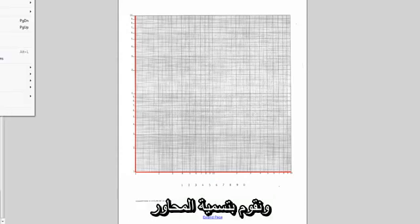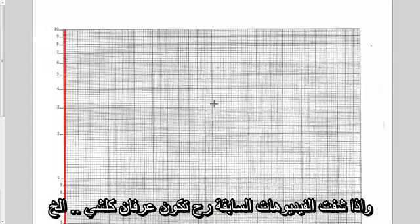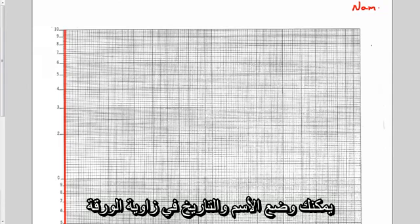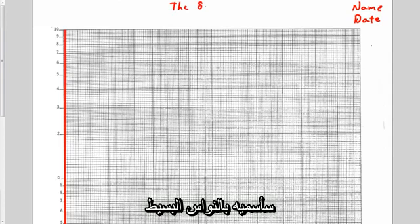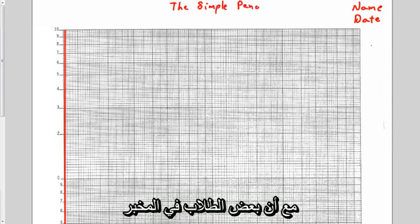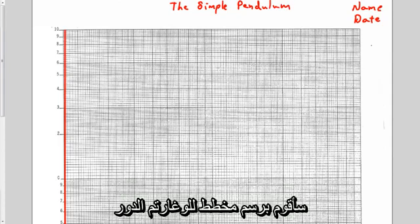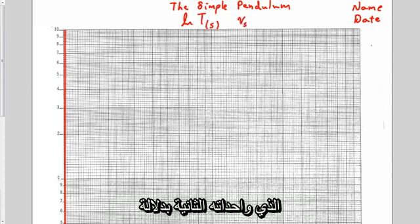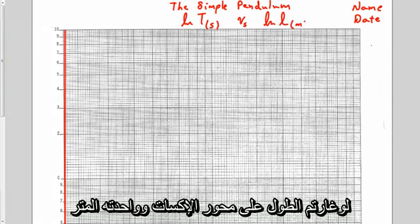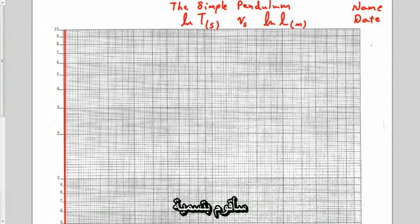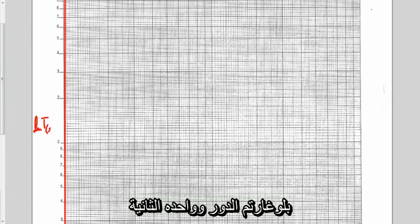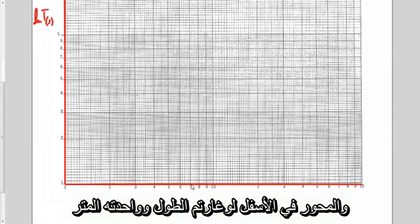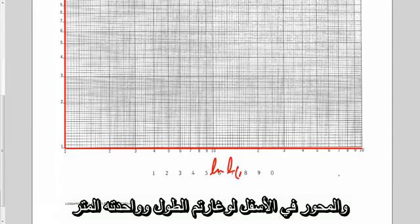Now I need to label this thing. You should have a name and date in the top corner, a title at the top. I'll call it the Simple Pendulum. I'm going to do a graph of the log of T in seconds versus the log of L in meters. This side will be log of T in seconds and down here the log of L in meters.